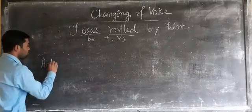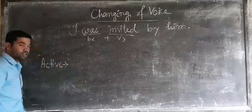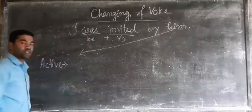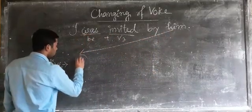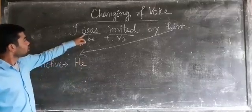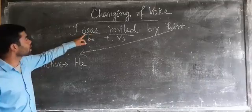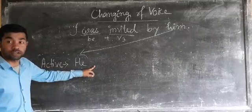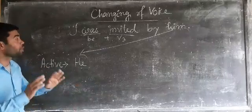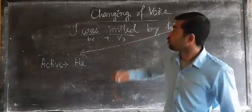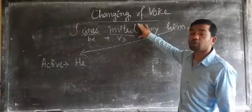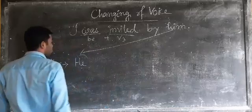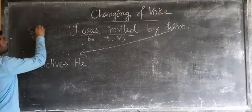Now this passive voice sentence we have to convert to active. The rules will be the reverse. The object of passive voice will be the subject of active voice — 'him' becomes 'he.' 'Was' is the be-verb; you cannot use it in active form, so be-verb should not be there. The sentence is in past indefinite tense. In past indefinite tense, the pattern is: Subject + second form of verb.